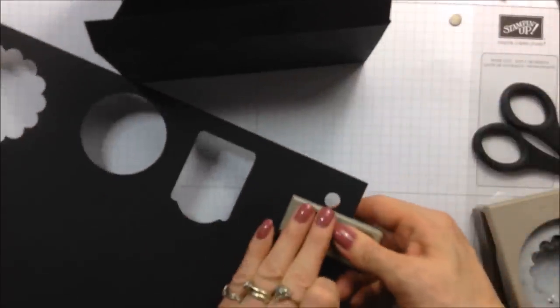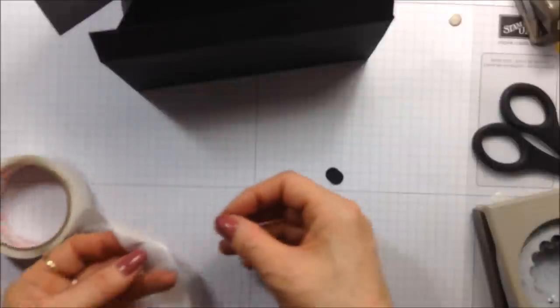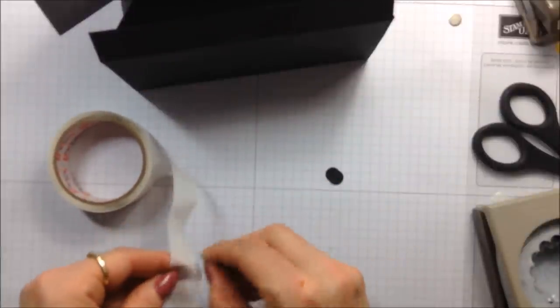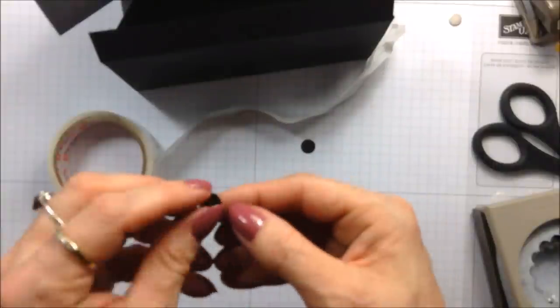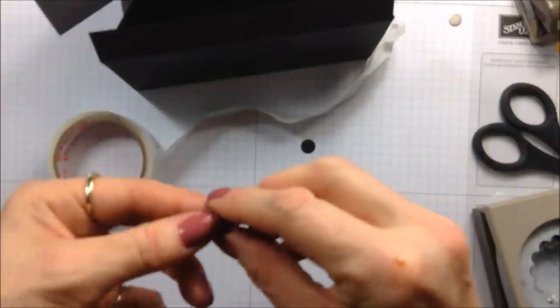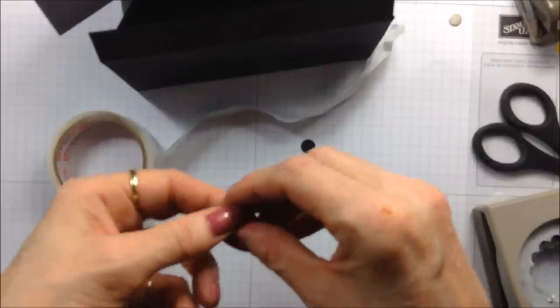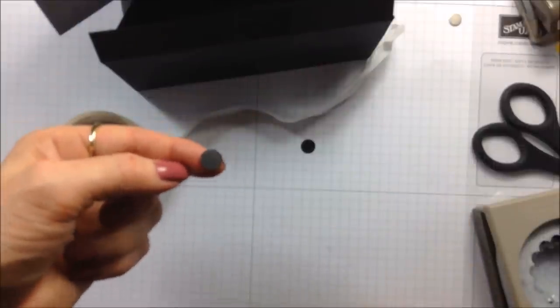I've got a little circle punch so I'm just going to punch myself out a couple of circles. I'm going to take my glue dots, I'm going to put one on there like that, and I'm going to put one of these on the other side like that. So I've covered up my magnet.